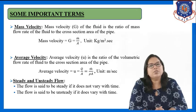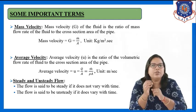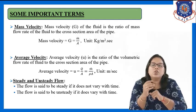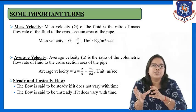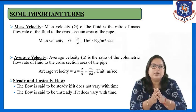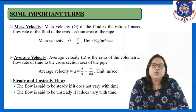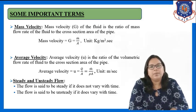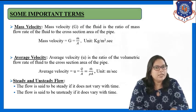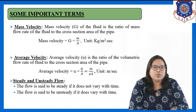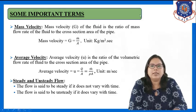What is mass velocity? Mass velocity of a fluid is the ratio of mass flow rate of the fluid to the cross section area of the pipe. Mass velocity is denoted by the symbol capital G. Capital G, mass velocity, is equal to mass flow rate (ṁ) upon cross section area (A).